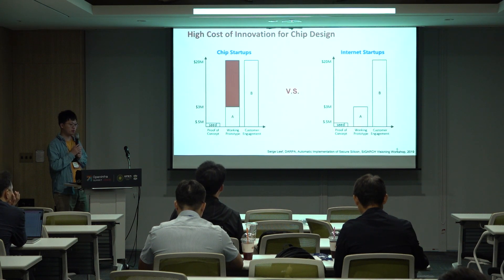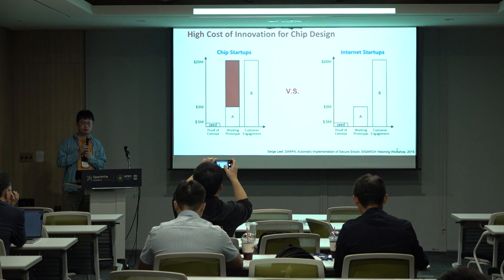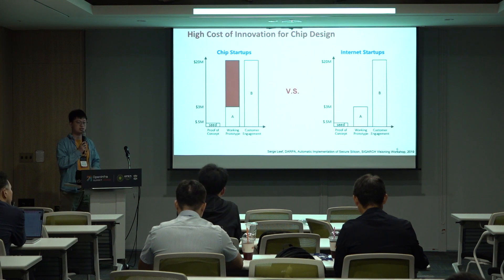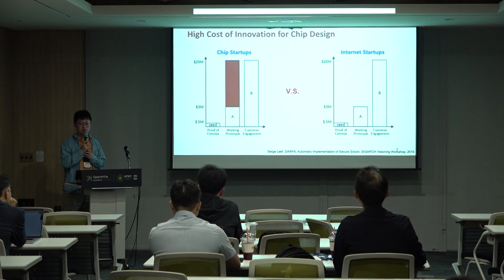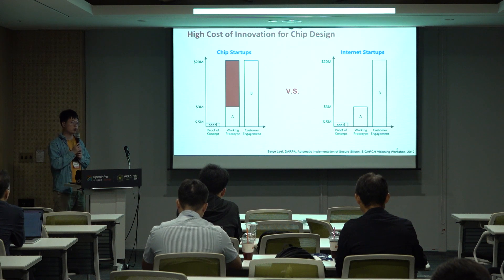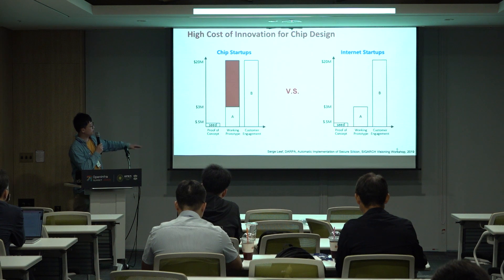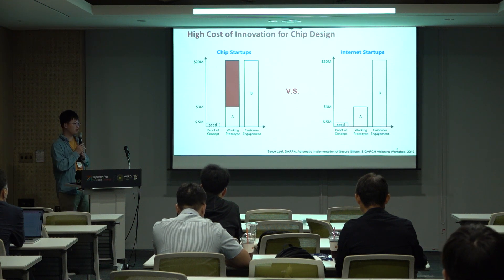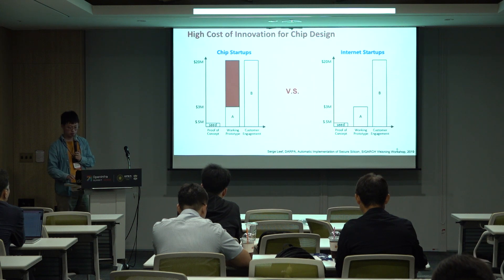We are very familiar with the open source software community. When we compare chip startups with internet startups, internet startups only need several months or maybe $3 million to grow. But for chip startups, if they want to build a working prototype, they need like $20 million. This is a huge investment that is not affordable for most companies.